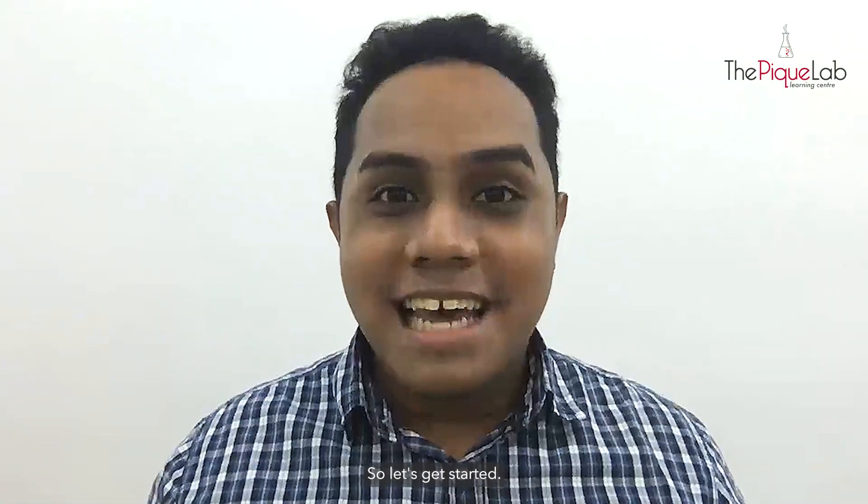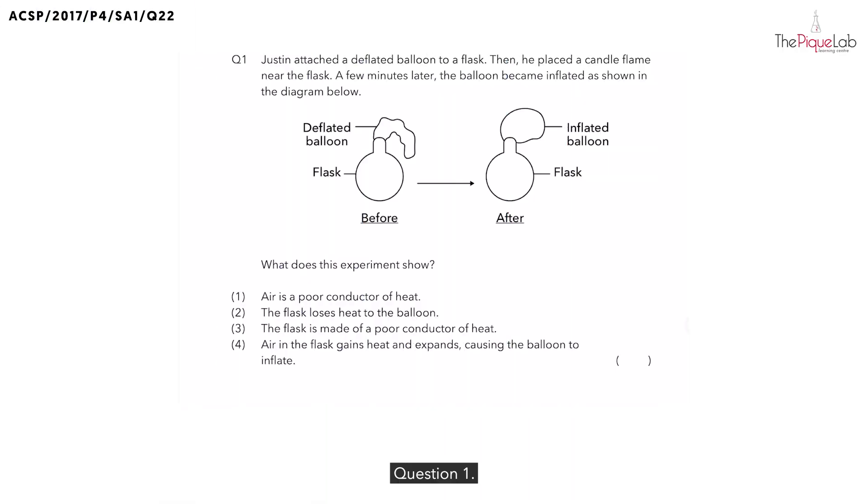So let's get started. Question one: Justin attached a deflated balloon to a flask as shown in this diagram and then he placed a candle flame near the flask. A few minutes later, the balloon became inflated as shown in the diagram below.